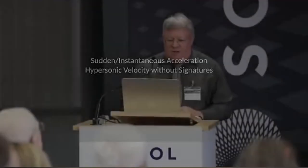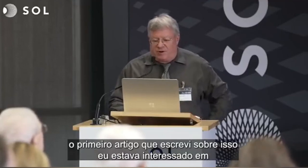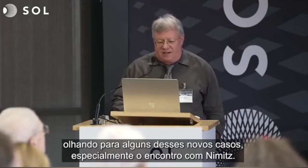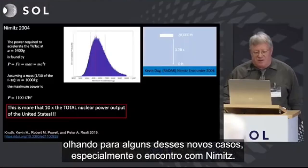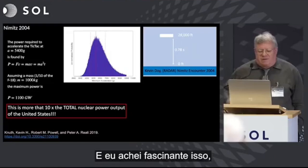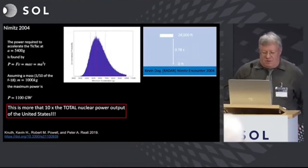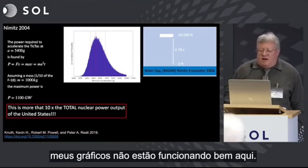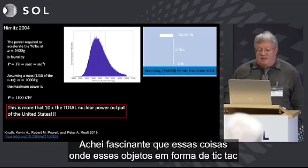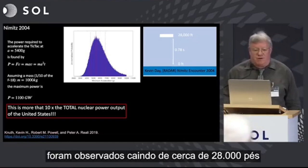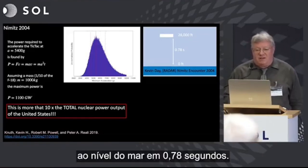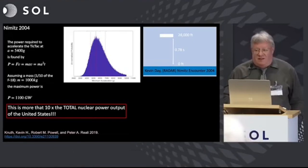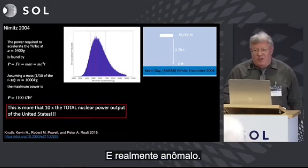I'm going to start out by talking about pretty much the first three all in one shot. Gary mentioned the first paper I wrote on this — I was interested in looking at some of these new cases, especially the Nimitz encounter. I found it fascinating that these tic-tac-shaped objects were observed to drop from about 28,000 feet to sea level in 0.78 seconds. That is crazy and really anomalous.